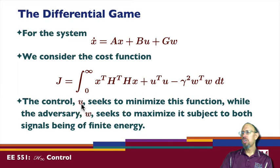As far as the cost is concerned u is going to try to minimize this function and w is going to try to maximize this function subject to both signals being a finite energy. Well, we can think of finite energy for starters. We can also we also saw that it can work for rms signals and so forth. But in terms of this problem we're going to look at finite energy.